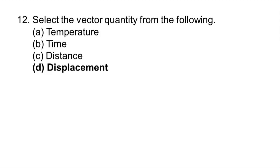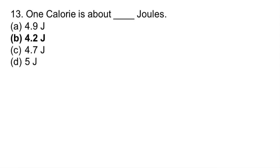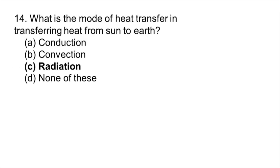Select the vector quantity among the following. Displacement. One calorie is about 4.2 joules. What is the mode of heat transfer in transferring heat from sun to earth? Radiation.